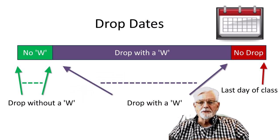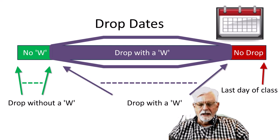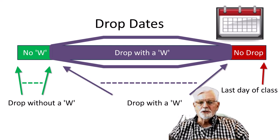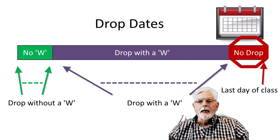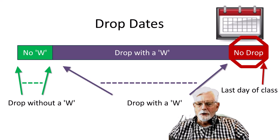Every class on campus has two important dates as far as dropping class. You can drop near the beginning of a class and nothing will show on your school records or transcript. The second date is near the end of the class. If you drop by that date, a W will show up on your records and transcript indicating that you signed up for the class and withdrew before the class was completed.